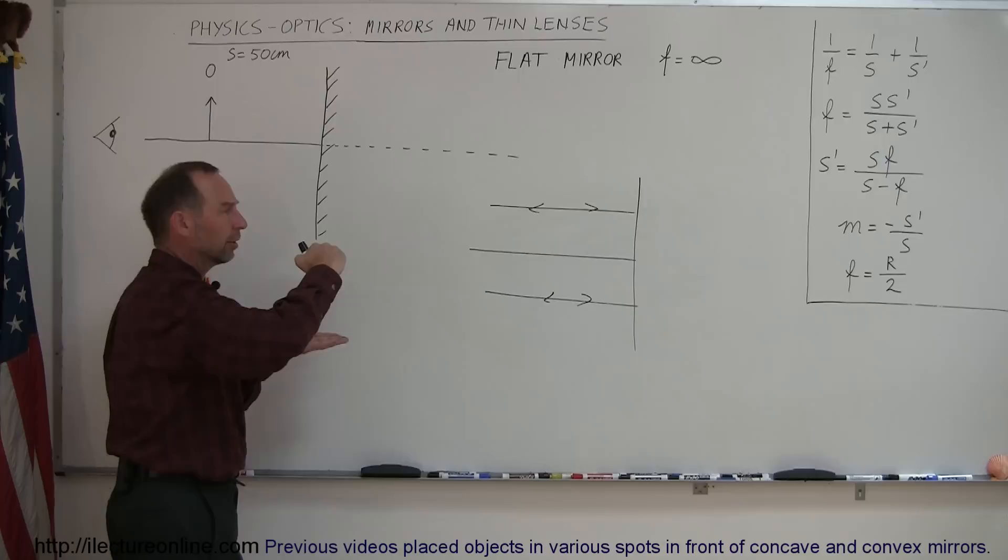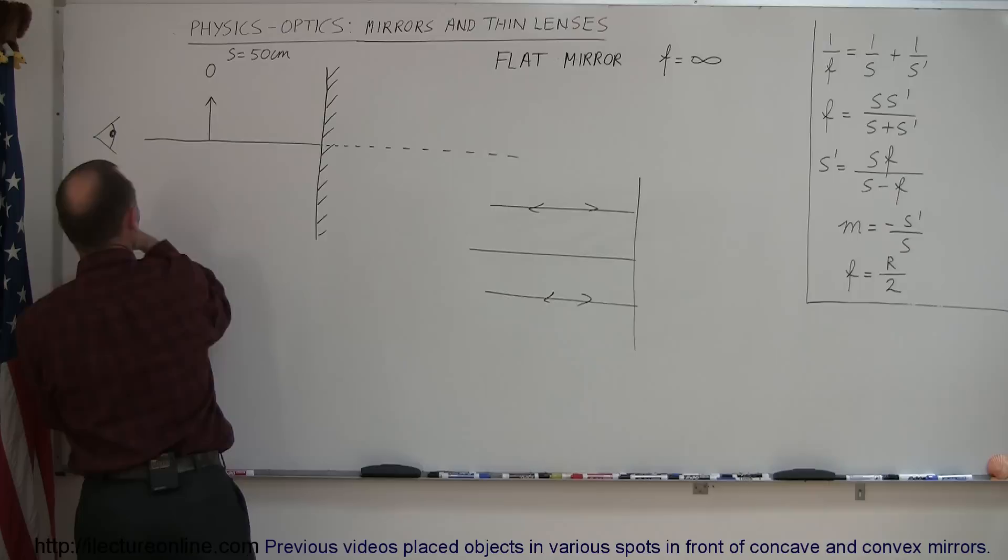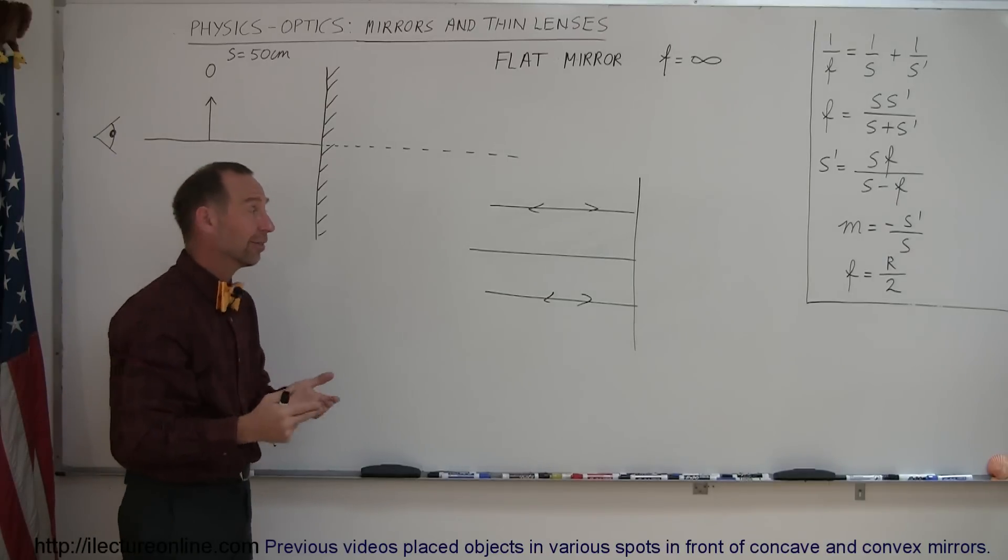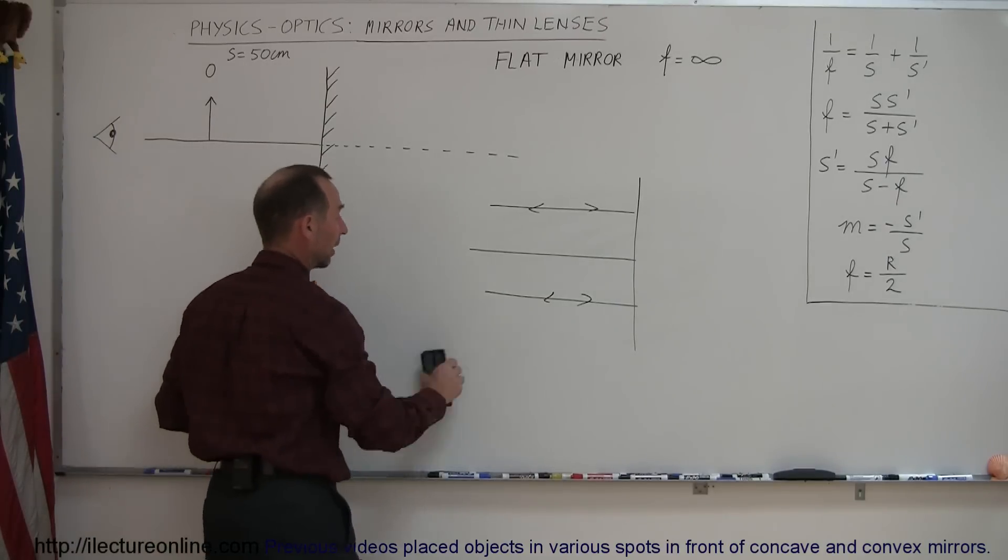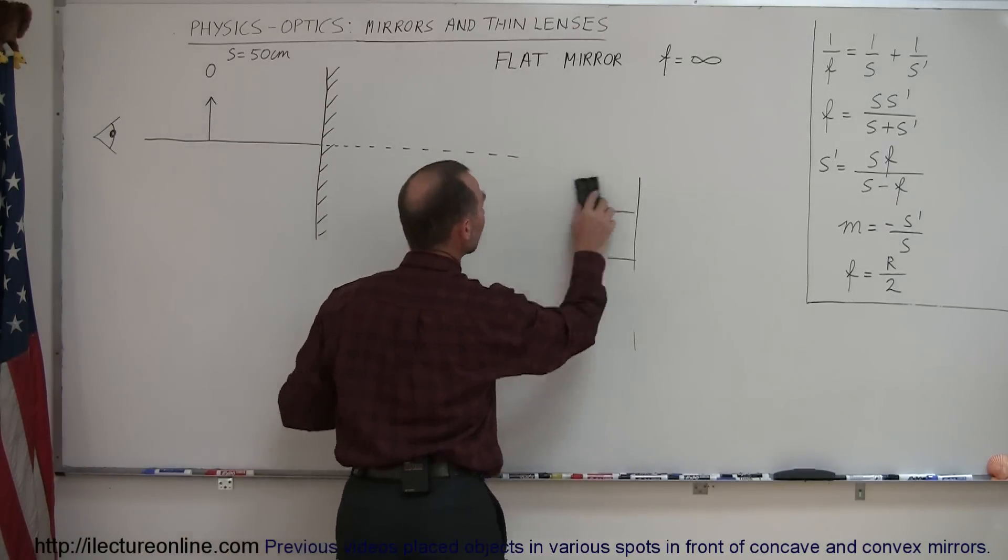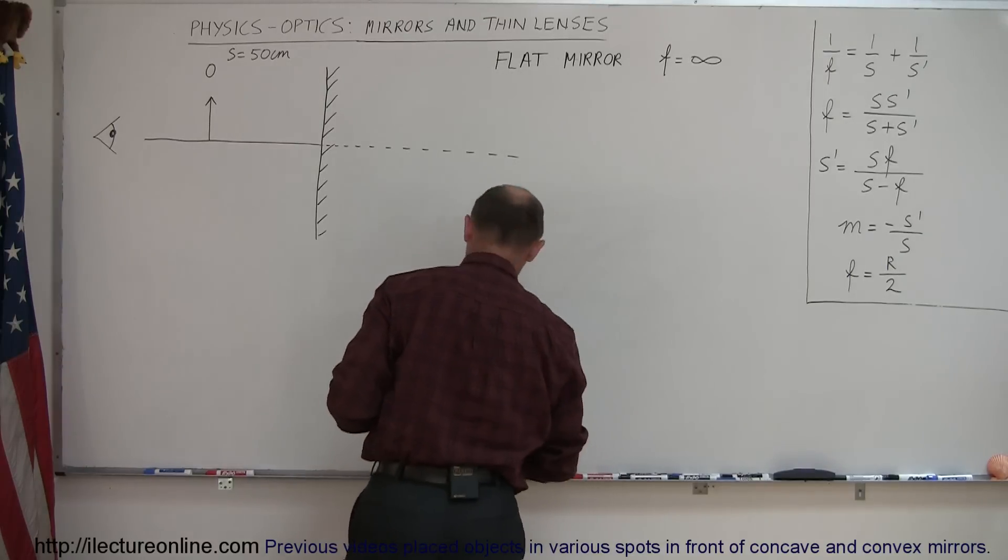In other words, they will converge, of course, but you have to go infinitely far away, which means that the focal point in this case is infinitely far away. All right, so that explains why we use infinity for the focal length of a flat mirror.